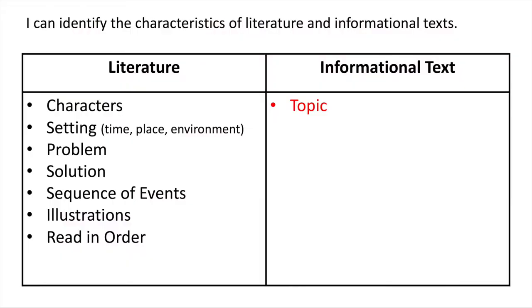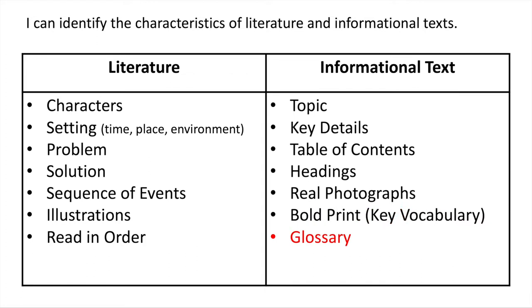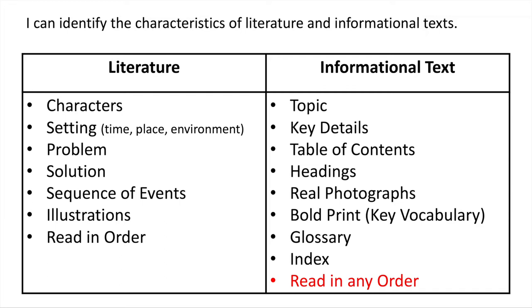This is an informational text, and we know this because it has things like a topic — which would be frogs — key details, a table of contents, headings, and real photographs. Sometimes in informational text you'll find bold print or a glossary, which helps you figure out the vocabulary words that were bold. And then you have an index. You can read an informational text in any order, whereas in literature text you have to read it in order or it's not going to make sense. Basically, an informational text gives you information or facts, also known as key details.